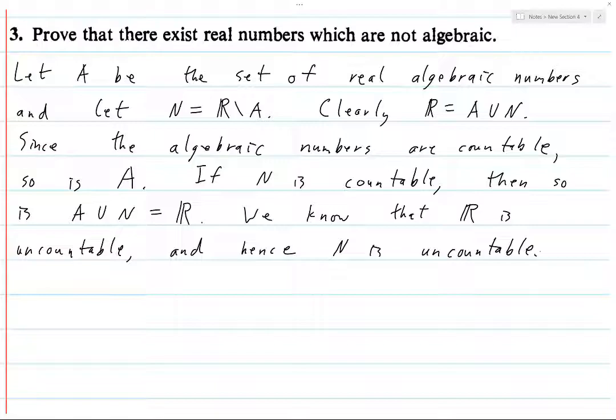What I was initially thinking of doing was saying, assume for contradiction that N is countable. Then A union N equals R is countable. This contradicts the fact that R is uncountable, and therefore, it cannot be the case that N is countable.